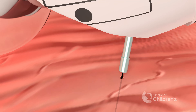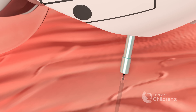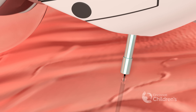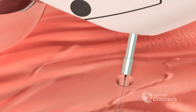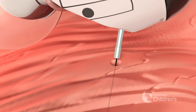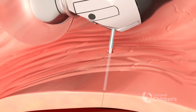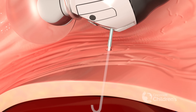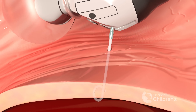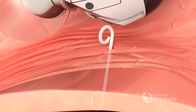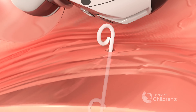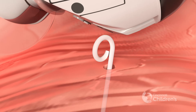The newly created cyst gastrostomy tract is then dilated with a balloon. Plastic stents are placed to keep this tract open and allow the cyst fluid to drain into the stomach. These will be removed in a few months when the pseudocyst has resolved.